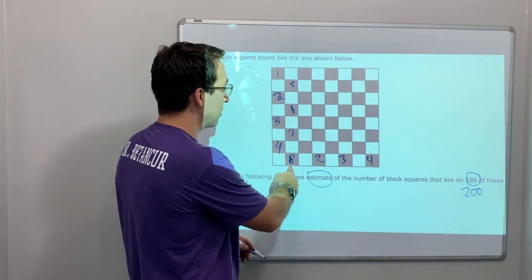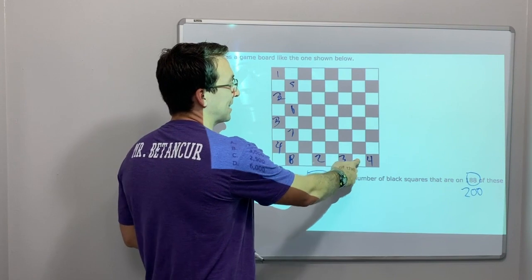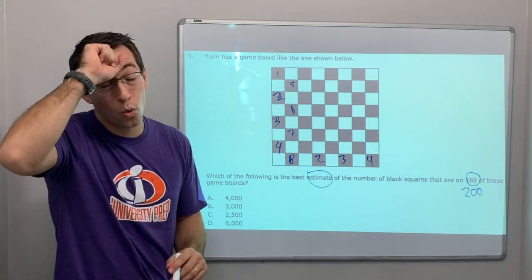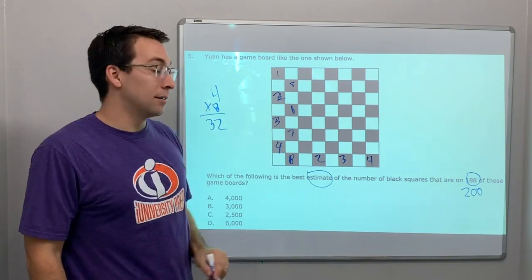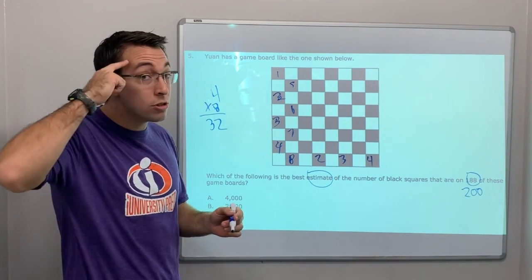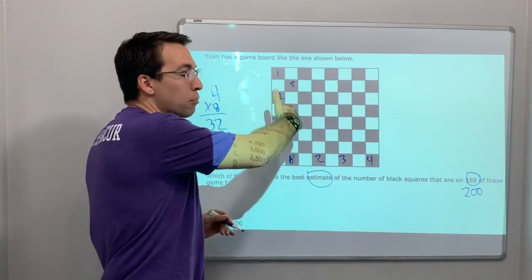4 times 1, 2, 3, 4, 5, 6, 7, 8. 4 times 8 is 32. See why I say don't just do stuff in your head. You've got to prove it on the board.